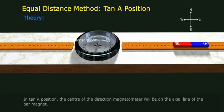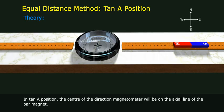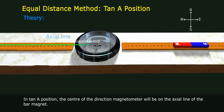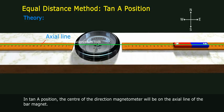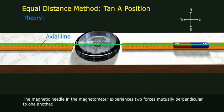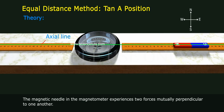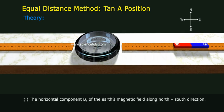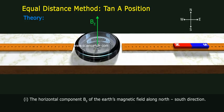Theory: In Tan A position, the center of the magnetometer will be on the axial line of the bar magnet. The magnetic needle in the magnetometer experiences two forces mutually perpendicular to one another: 1. The horizontal component B of the Earth's magnetic field along the north-south direction.